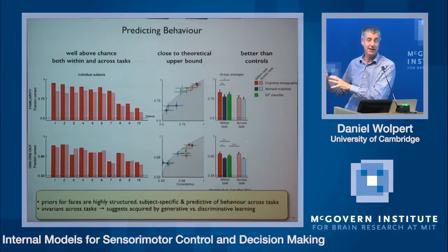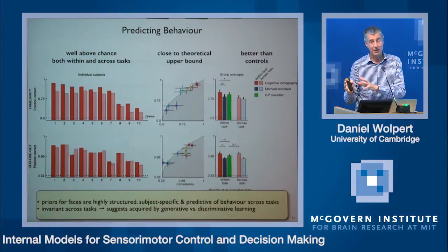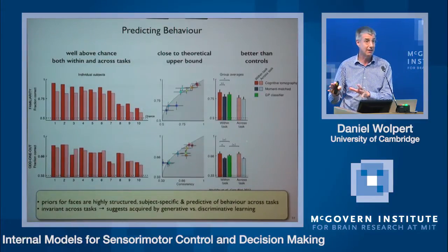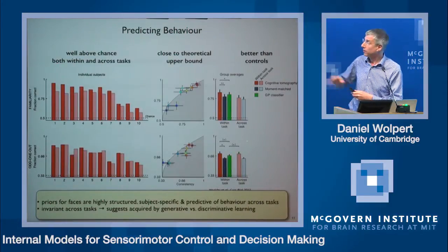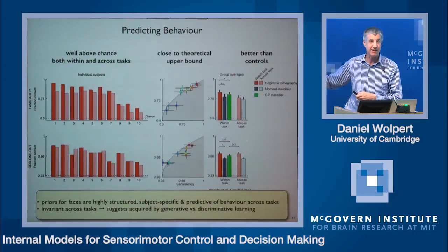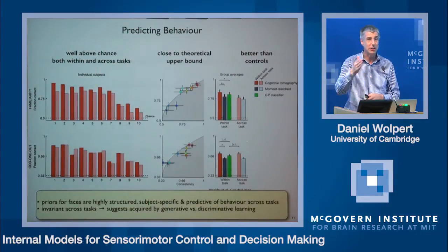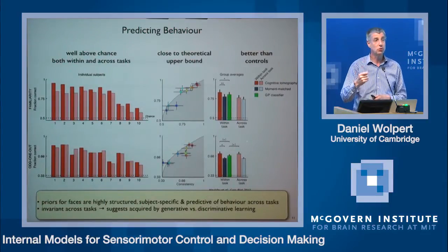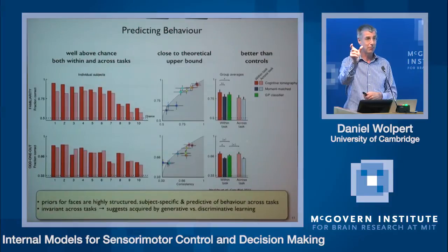We think this technique can be extended to higher dimensions and to other tasks, and it's an exciting opportunity to link to neurophysiology and imaging work. One challenge is that as you go to higher dimensions you need a lot more training data from subjects. One way to get around that is active learning — choosing the best next data samples to give to subjects to extract the most information — which we hope to achieve with new machine learning techniques.